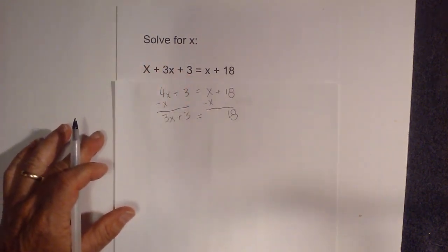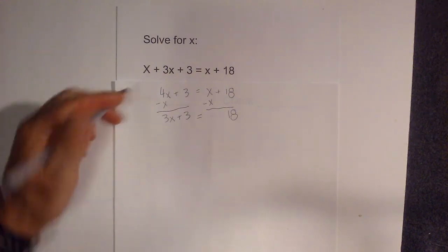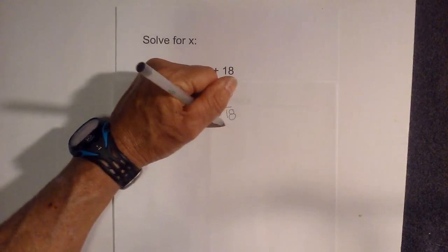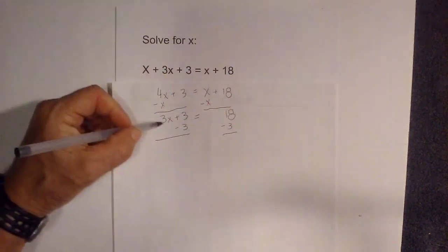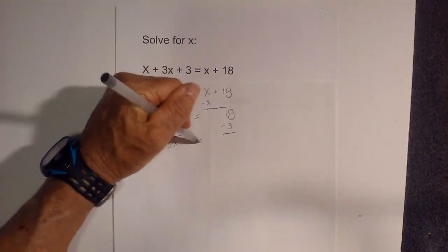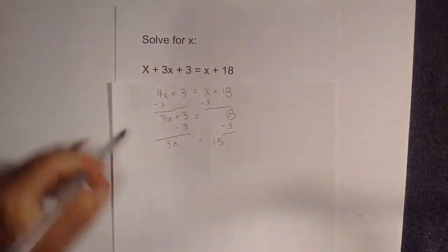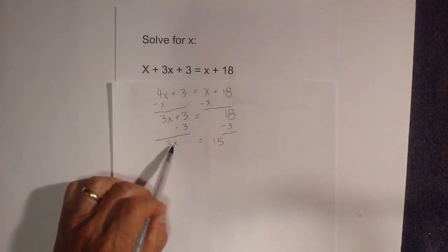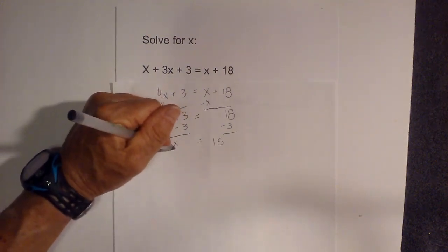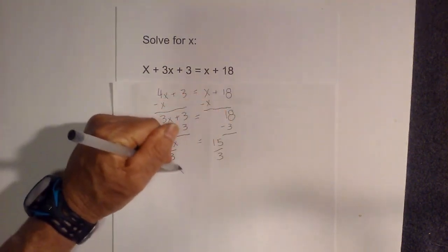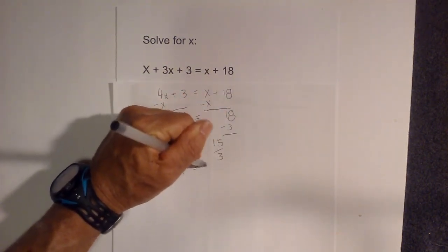Now I can remove numbers or constants. So I'm going to subtract a 3 from both sides. Bring down the 3x, these cancel, equals 15. Now what number times 3 equals 15? To find that I just divide by 3. So x is equal to 5.